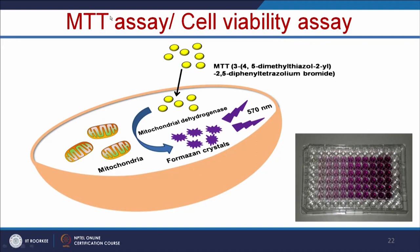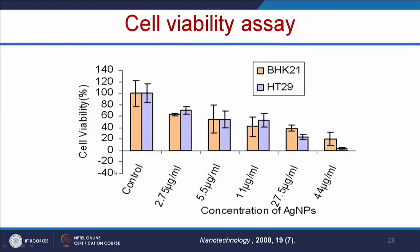The next method is MTT assay or cell viability assay. Here we use the MTT solution, which is normally a yellow color. In presence of mitochondrial dehydrogenase enzyme, this converts from yellow into formazan crystal — a purple color. If you have more viable cells, you will have more color. With respect to concentration, you can easily monitor the cell viability using a microplate reader and plot the cell viability. In the control there is no nanoparticle, and with respect to different concentrations of nanomaterials, the cell growth goes down.